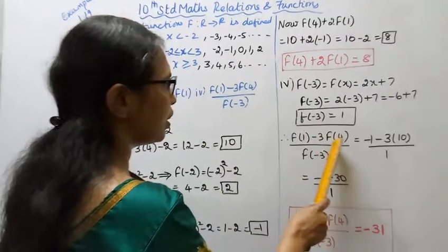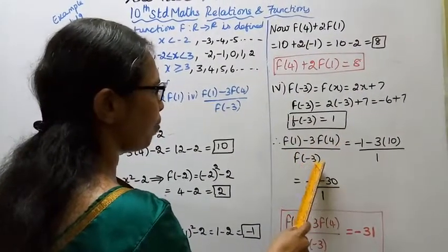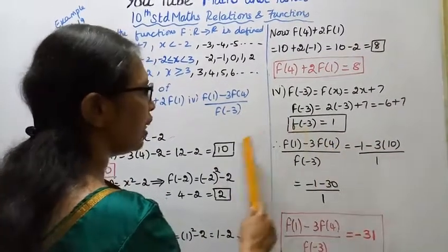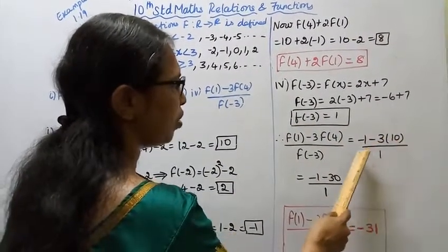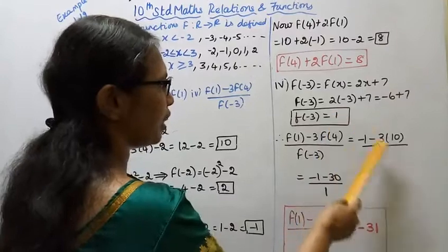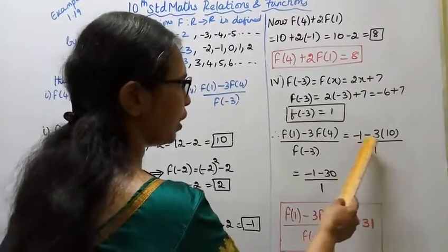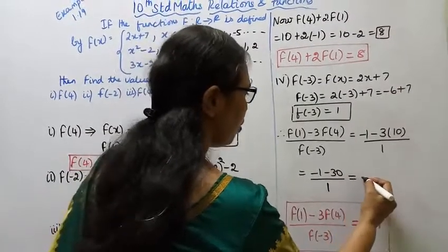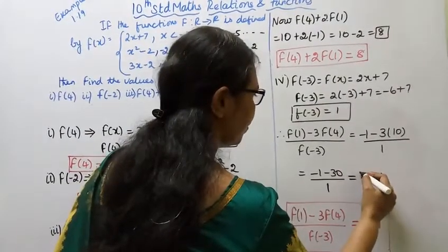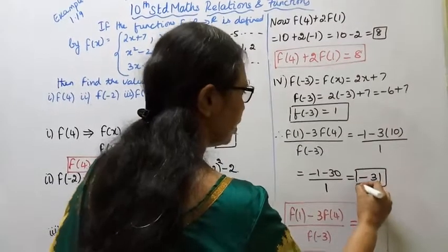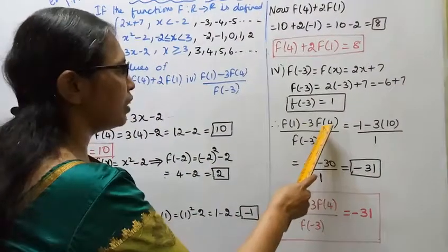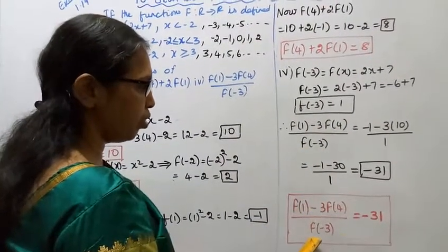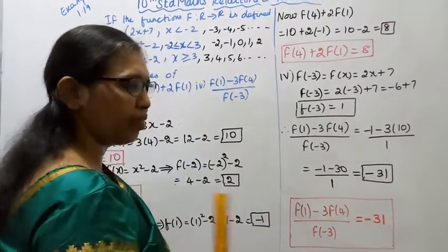Now f(1) minus 3 into f(4) divided by f(minus 3). f(1) is minus 1, f(4) is 10, f(minus 3) is 1. So minus 1 minus 3 into 10 equals minus 1 minus 30 equals minus 31 divided by 1, which equals minus 31. So the answer is minus 31.